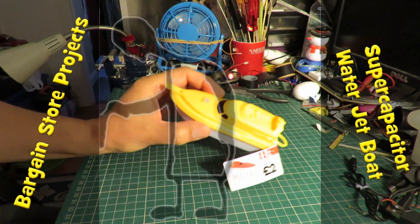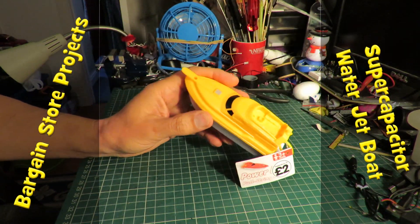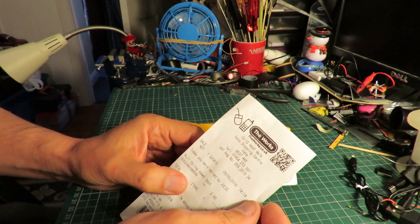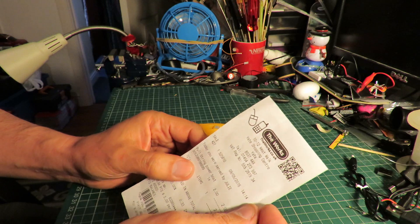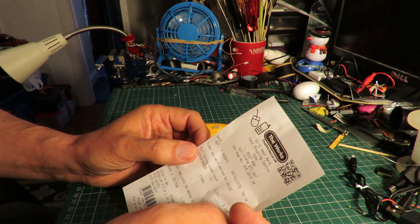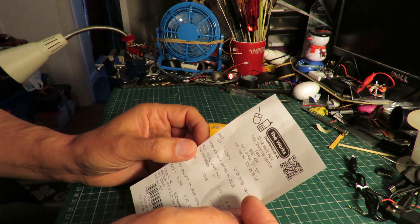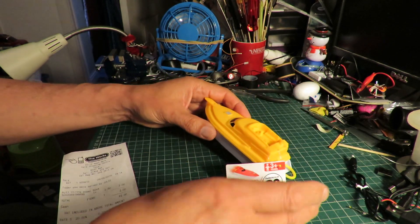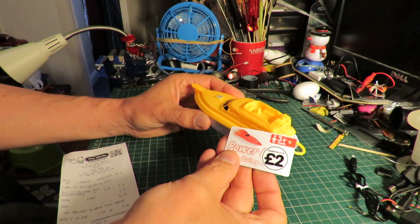Hi guys. Spotted this little toy boat in the works, one of the shops in Yate. Well, they're in all sorts of places. Paid a bit more for it than I normally want to. Two pounds, well you see that, big label on it, two pounds.